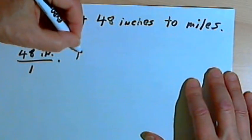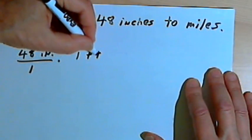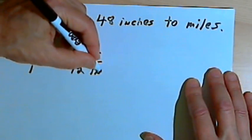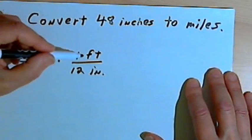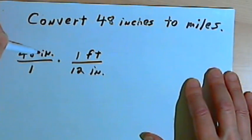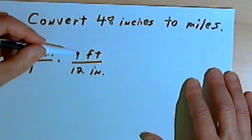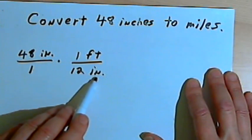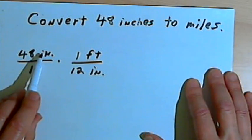So let's see. 1 foot is the equivalent of 12 inches. So I'm going to make a fraction where 1 foot is the numerator, because that's what I want to turn my number into, into feet. And 12 inches is the denominator, that's what I want to be able to cancel out, the inches.